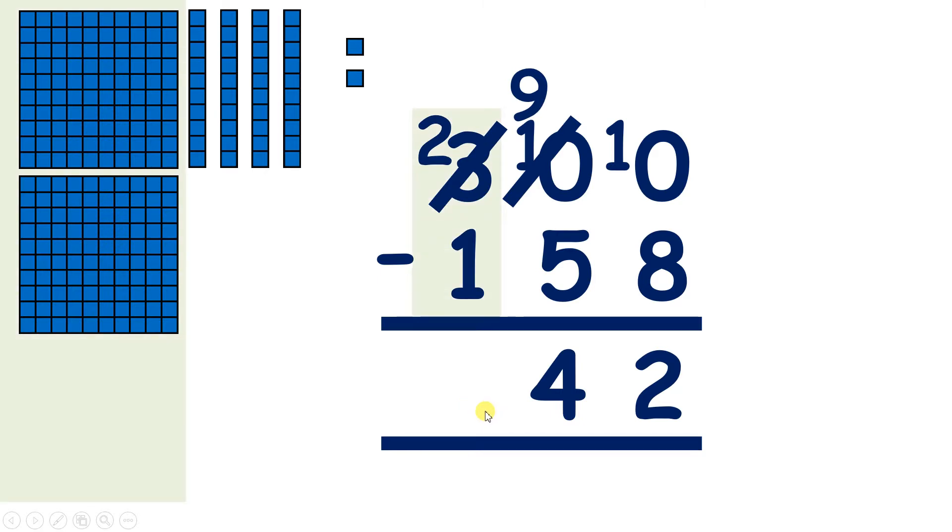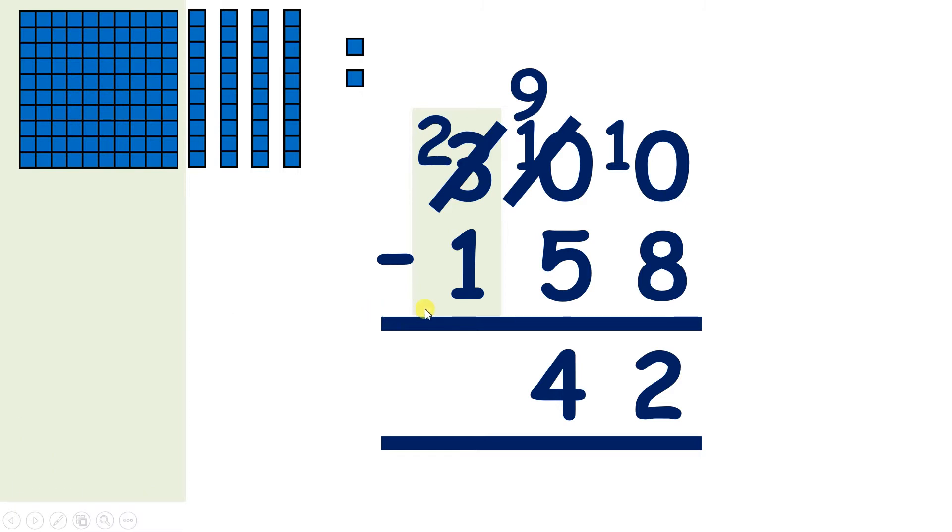Now on to hundreds. We have 2 hundreds. So if we take away 100, that leaves us with 100. So we have 142.